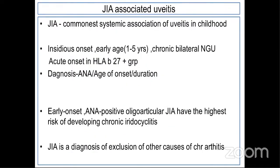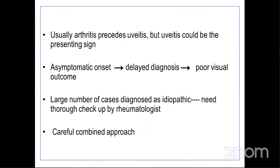Looking at the literature, JIA is the commonest systemic association of uveitis in childhood. It is usually insidious in onset, presenting in one to five years. It presents with a chronic, bilateral, non-granulomatous type of uveitis. Acute onset disease can be seen in HLA-B27 positive cases. Diagnosis is usually based on antinuclear antibody, age of onset, and duration of pain and arthritis. The early onset disease, classically ANA-positive oligo-articular JIA, has the highest association and risk of developing chronic anterior uveitis. The arthritis usually precedes the uveitis, but uveitis could be the presenting feature. Asymptomatic cases are generally diagnosed too late, coming up with poor visual outcomes. A large number of cases are diagnosed as idiopathic uveitis, requiring thorough follow-up with a rheumatologist and a detailed, tailored, combined approach.